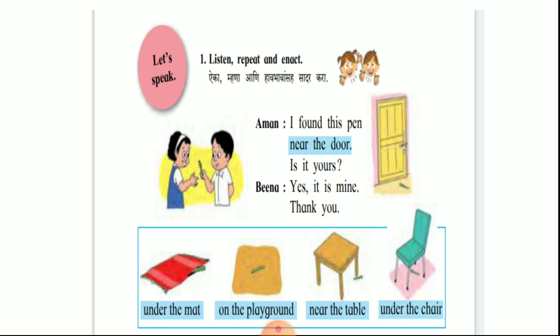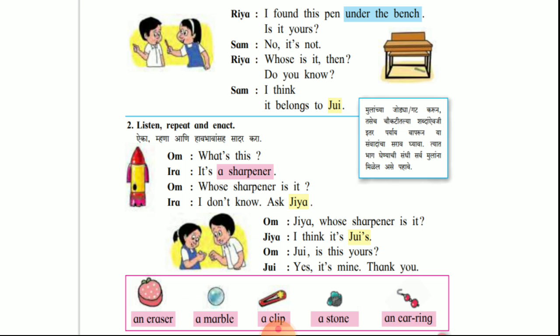Near the door — rai waji. Pudil shabda sa mohova. Under the mat — sa tai khali. On the playground — khera cha maidan awar. Near the table — tablela jawal. Under the chair — khurchi khali.